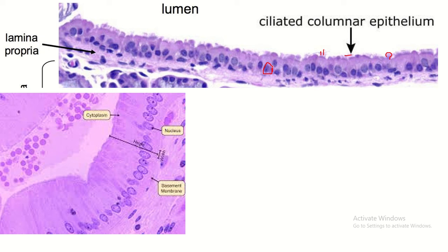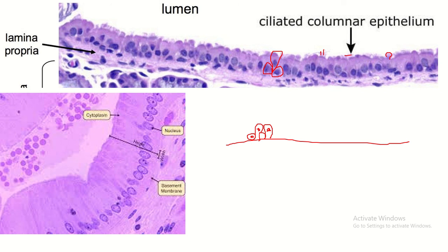It is pseudostratified because it is actually a simple, single-layer epithelium, but the size of the cells is different — some are shorter cells and some are taller cells. So the nuclei are situated at different levels, which makes it look like a stratified epithelium, but it is actually a single-layer epithelium.